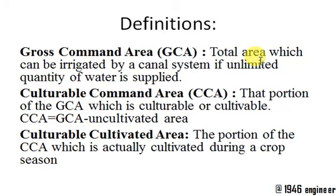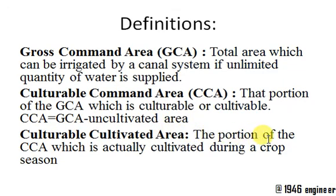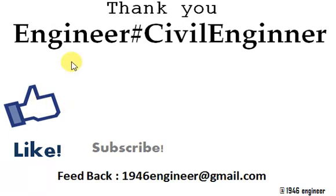Cultural Command Area is the portion of the Gross Command Area which can be cultivated. Cultural Cultivated Area is the portion which is actually being cultivated during a crop season. Thank you for watching — if you like this video please hit the like button and subscribe to Engineer Hash.